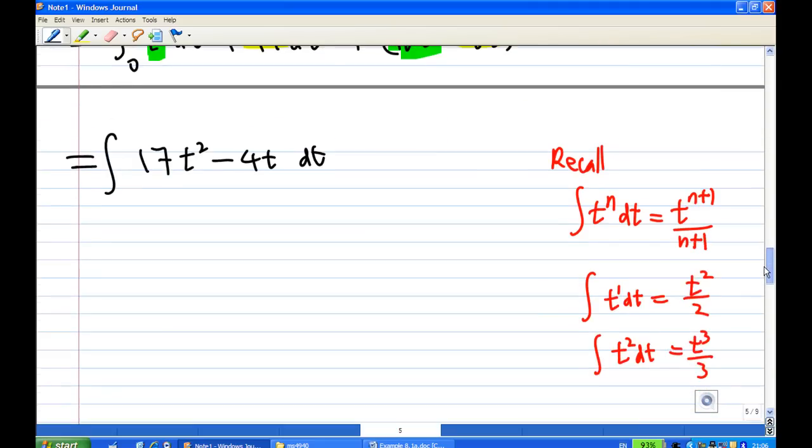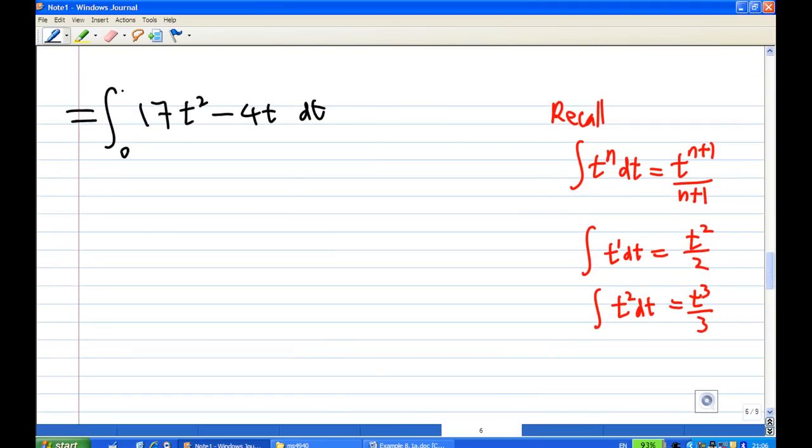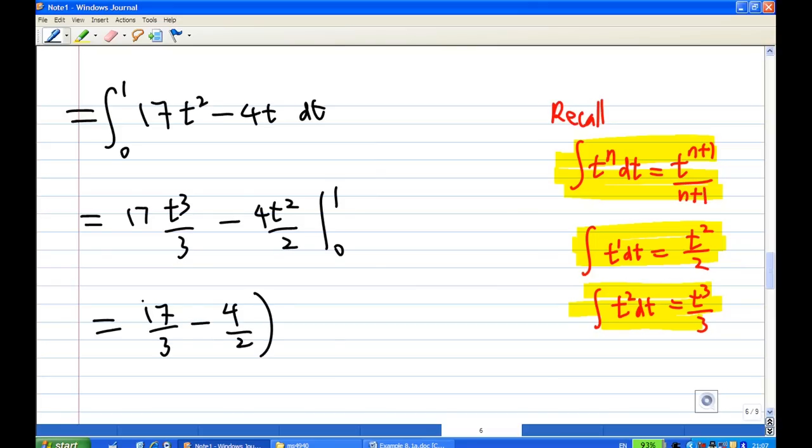So this is going to be integration from t equal to 0 to 1. And then you recall the integration. Integration of t power n is t power n plus 1 over n plus 1. So integration of t and t squared, this will give you 17t cubed over 3 minus 4t squared over 2 from 0 to 1. So put t equal to 1 inside, you get 17 over 3 minus 4 over 2. Put t equal to 0, you get 0 every time.